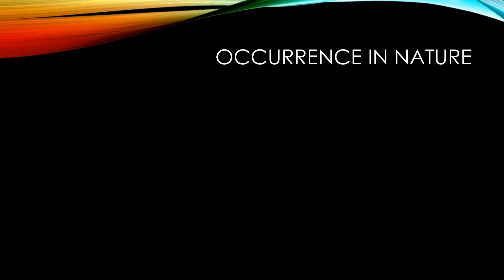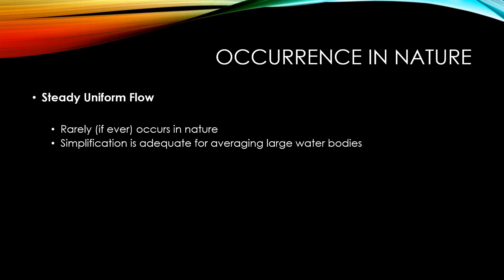These four classifications — steady, unsteady, uniform, and non-uniform — have different levels of occurrence in nature. The simplest form, steady uniform flow, rarely occurs in nature; in fact, it almost never occurs in nature. However, this simplification is adequate for averaging the properties of very large water bodies. Civil engineers may use a steady uniform flow simulation to determine the average velocities and flow depth in large bodies such as the Mississippi River.